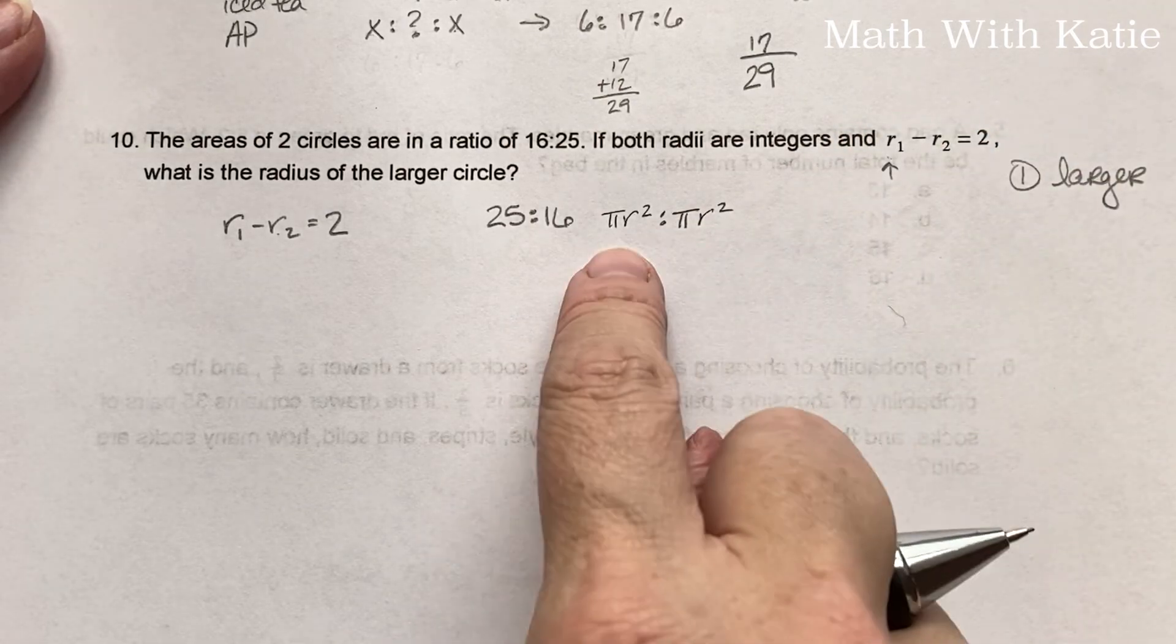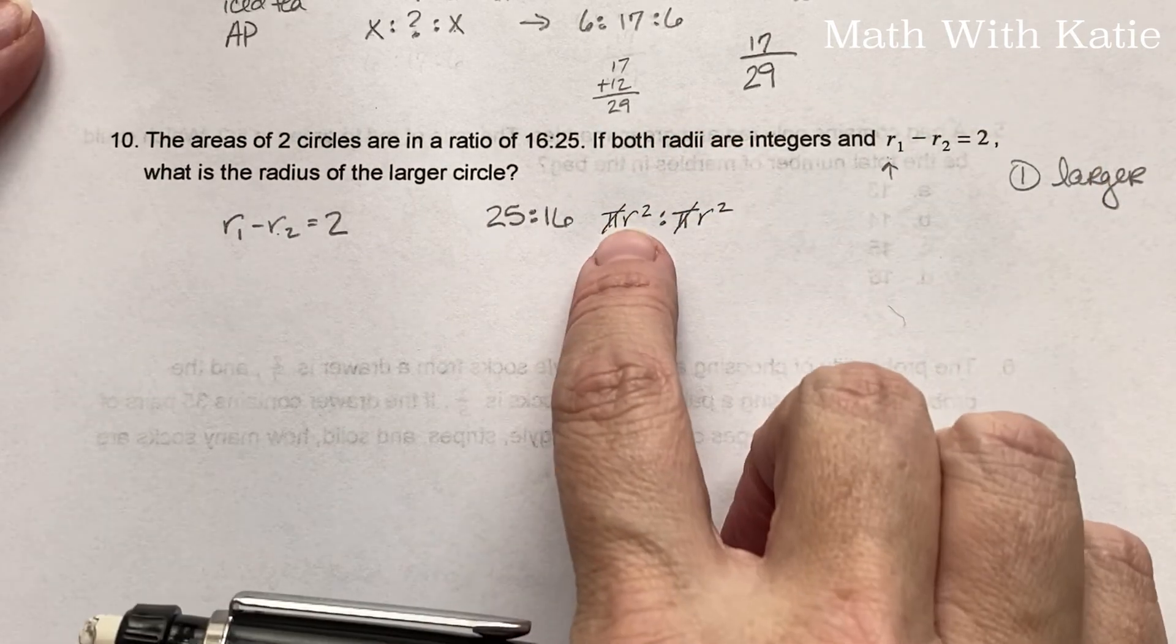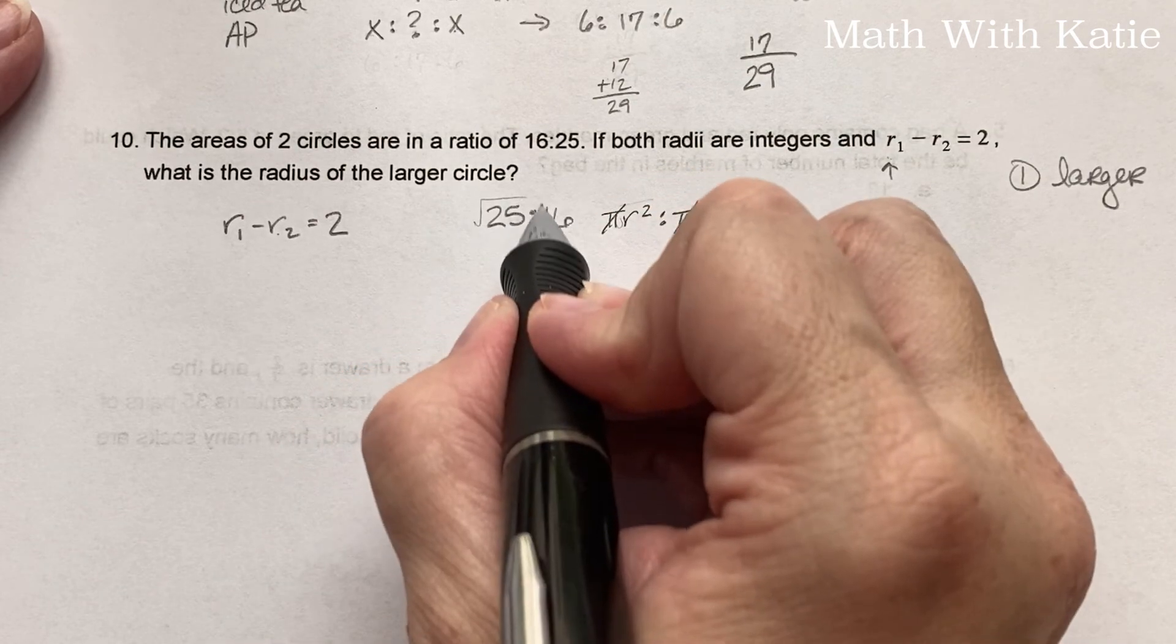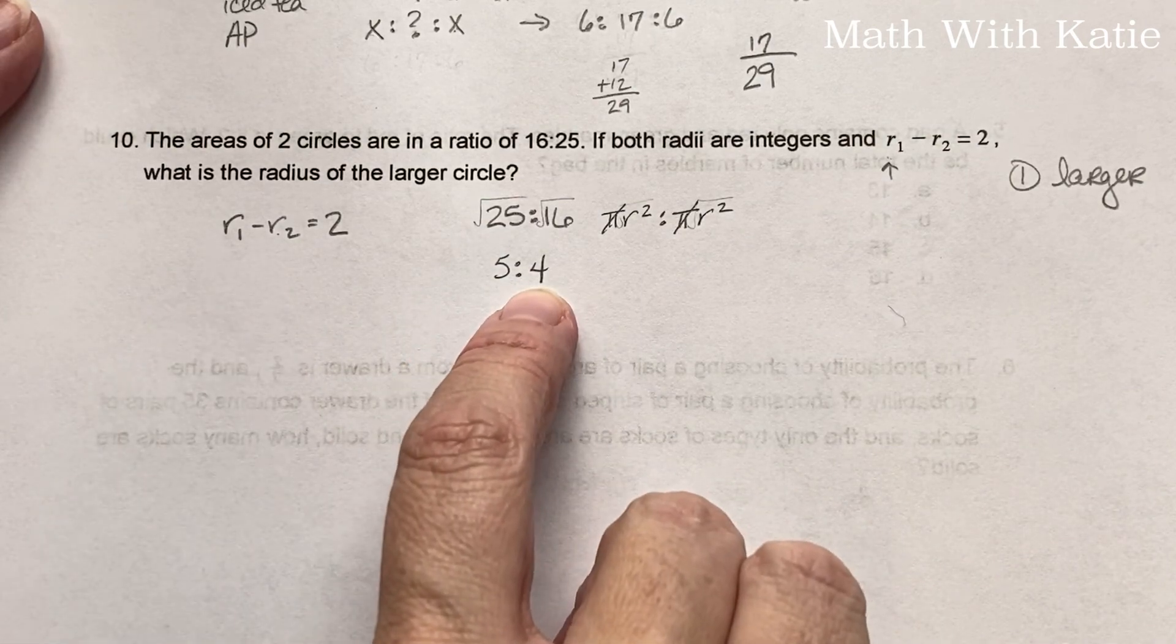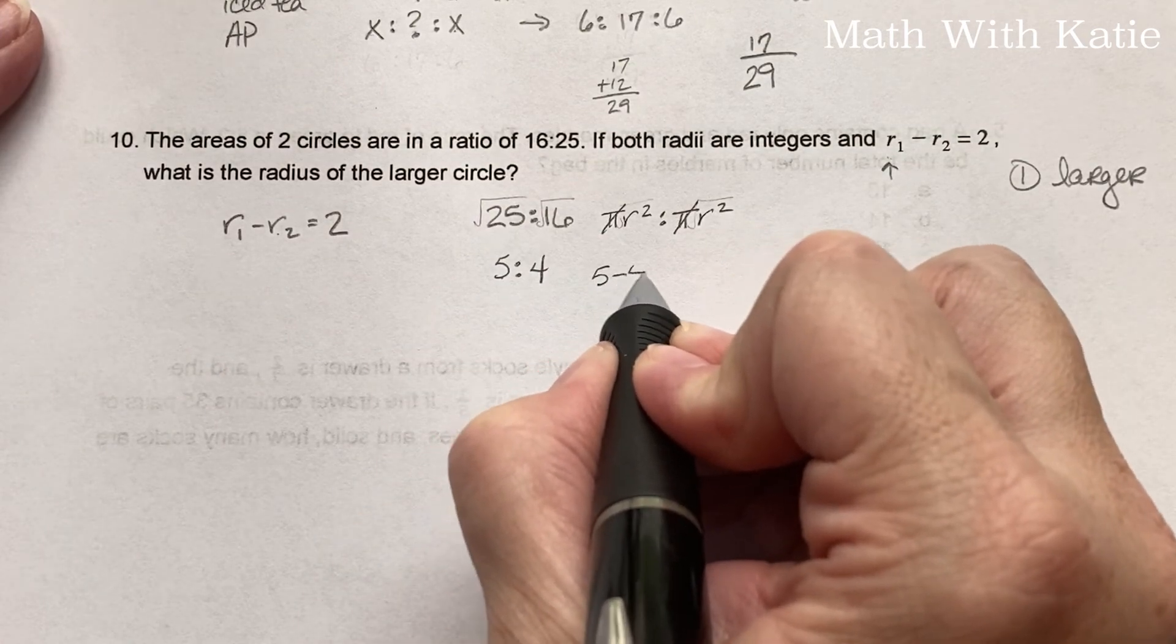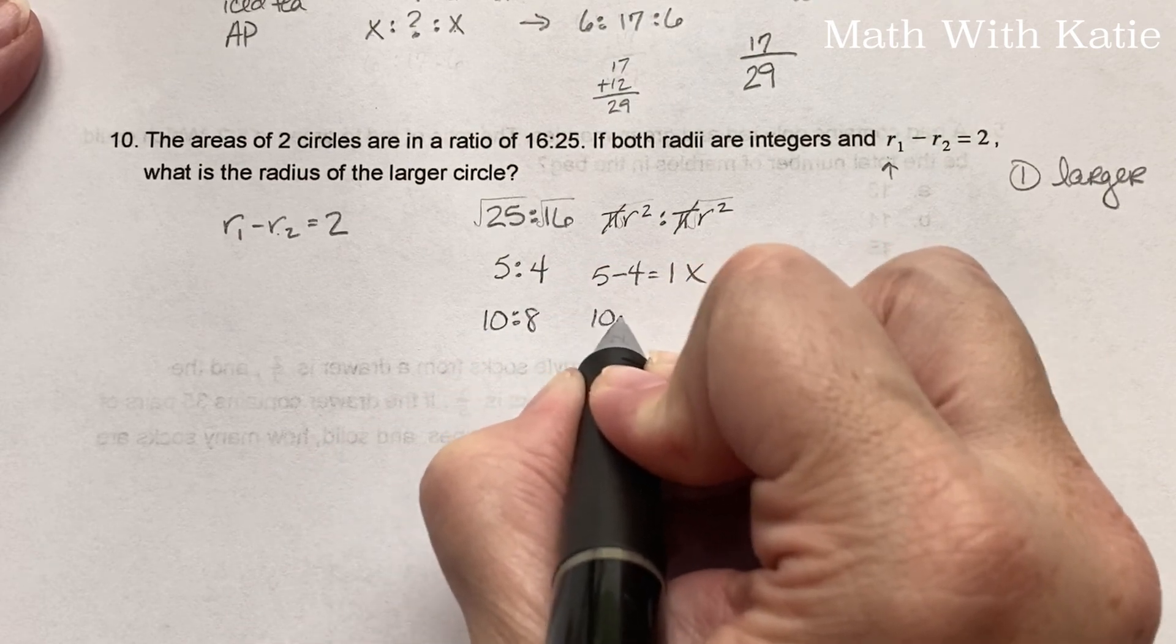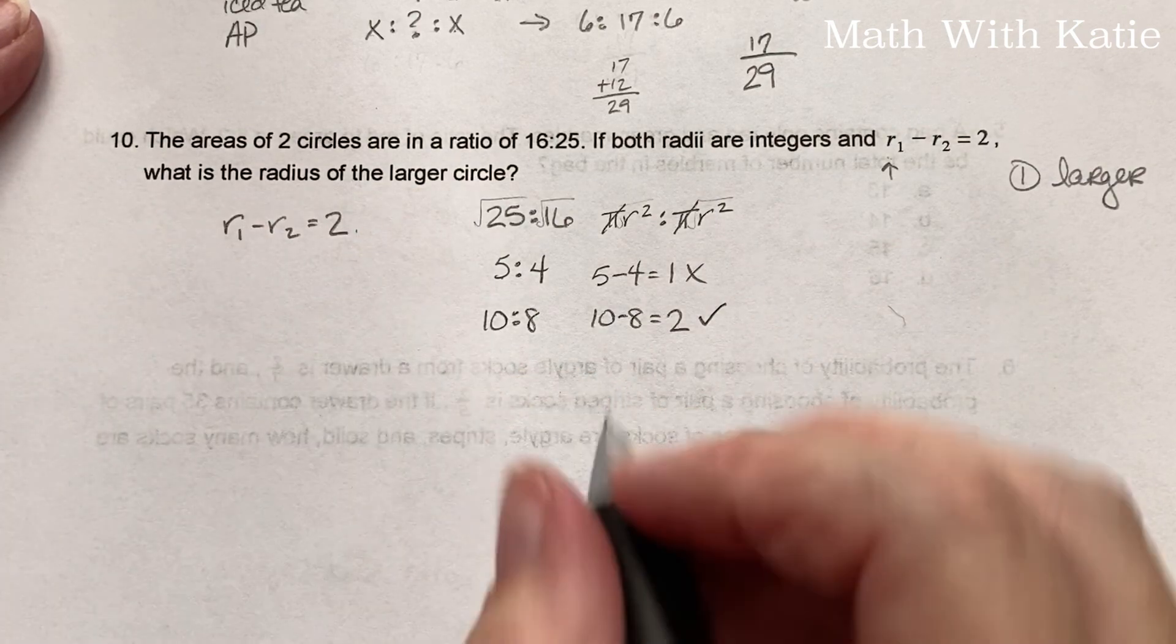Since we know that the area of a circle is pi R squared, we can set those in a ratio as well. If we divide pi by both sides, that drops off. So we're left with R squared to R squared. To get rid of this power of two, we're going to square root both sides. So we get five to four. Now if we subtract these, we do not get two, because five minus four is one. So now we'll take our ratio and multiply it by two. So then we get 10 to eight. If we subtract those, we get two. There we go. So the radius of the larger circle is 10.